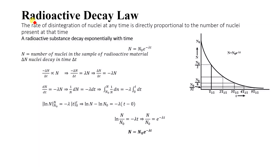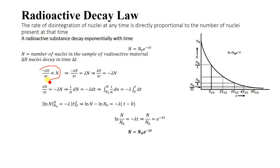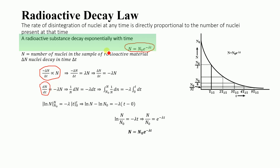Hello everyone, welcome to EGDU. Today we are going to discuss radioactive decay law. This law states that the rate of disintegration of nuclei at any time is directly proportional to the number of nuclei present at that time. The final form of the law is that a radioactive substance decays exponentially with time.